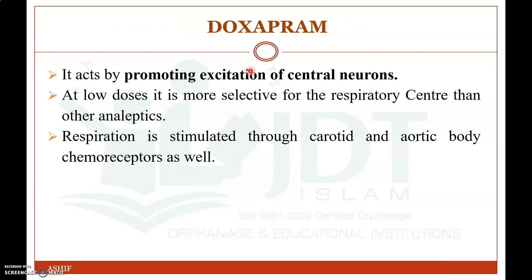An example of an analeptic is doxapram. Its mechanism of action is by promoting excitation of central neurons. At low doses, it is more selective for the respiratory center than other analeptics, and respiration is also stimulated through the carotid and aortic body chemoreceptors. So doxapram is an example of an analeptic or respiratory stimulant used as a CNS stimulant.